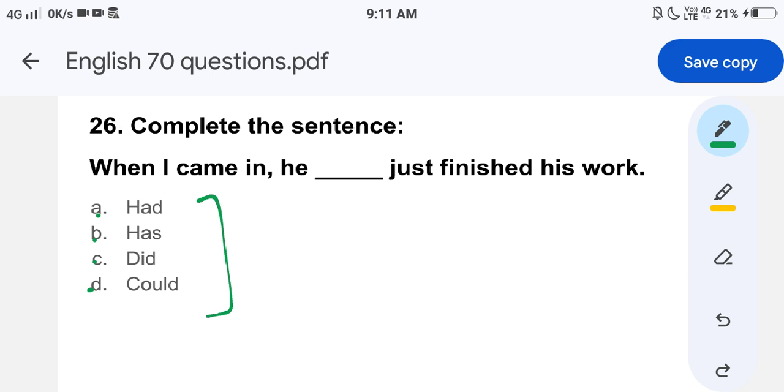So as per the uses that I have explained now, can we guess what the answer is? When I came in, he ___ just finished his work. The answer is he had just finished his work. Why? Let me repeat the explanation again. Had can also be used as an auxiliary verb to form the past perfect tense. This tense is used to express an action that happened before another action in the past.